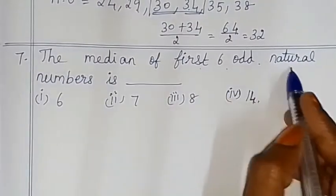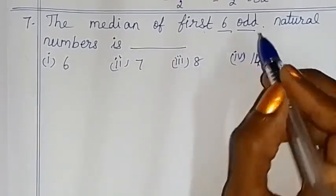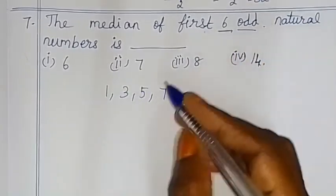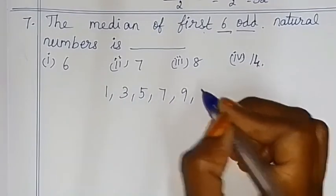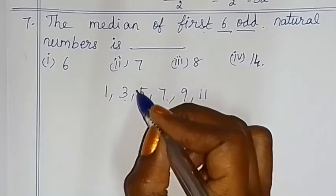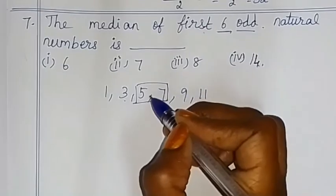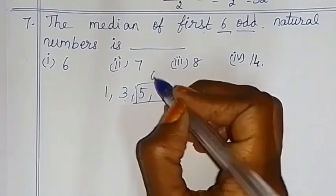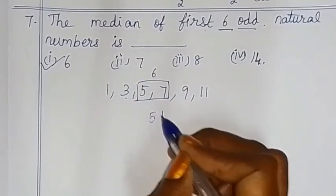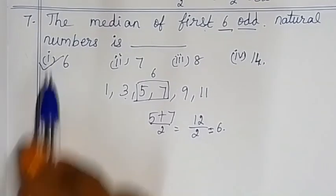Find the median of the first 6 odd natural numbers: 1, 3, 5, 7, 9, 11. There are 6 terms — even. The two middle terms are the 3rd and 4th: 5 and 7. Median = (5 + 7)/2 = 12/2 = 6. So 6 is the correct answer.